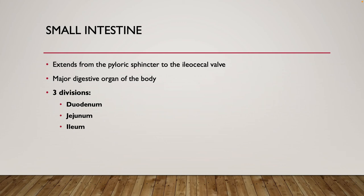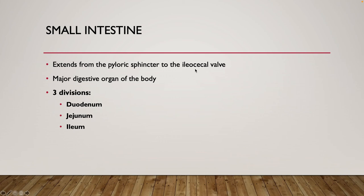Let's look at some features of our small intestine. We have a duodenum, which is the first part. We have a jejunum, which is the middle part. And then we have an ileum, which is our third and most distal part. It is the main place where lots of digestion and some absorption happen. The pyloric sphincter controls movement from the stomach into the duodenum, and the ileocecal valve controls movement from the ileum into the cecum.